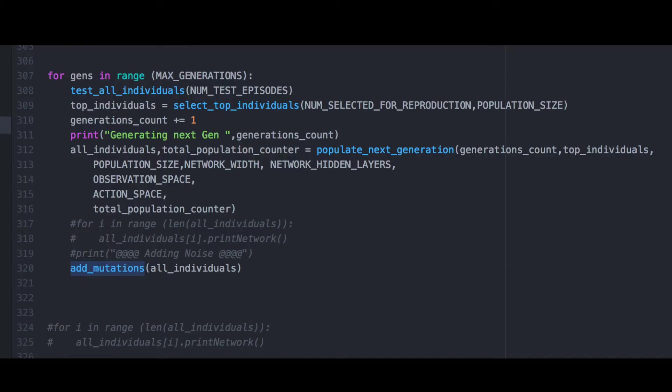2. We have a way to measure the fitness of each individual every generation. In life's case, it is survivability. In our case, it will be the distance covered by our robot, or how well the agent can land on the moon.